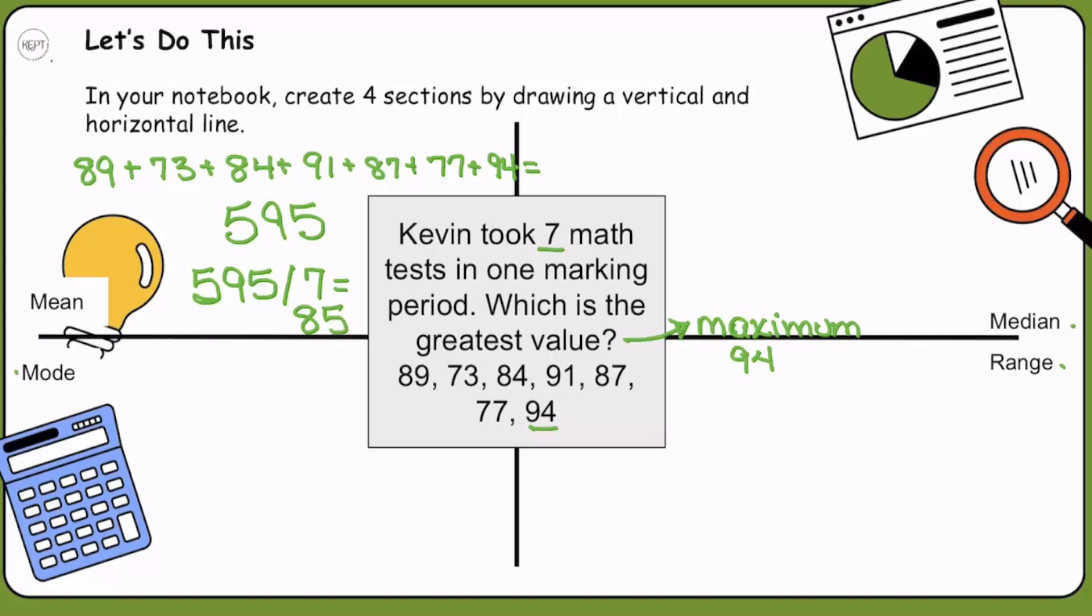Now let's continue to find the median. The first thing we want to do is write our numbers in order from least to greatest. That is 73, 77, 84, 87, 89, 91, and 94. Now that we have those written from least to greatest, we just mark them off and find the one in the middle. Mark the lowest, then the highest; then the lowest, then the highest; then the lowest, then the highest. We can see here 87 is that one in the middle.